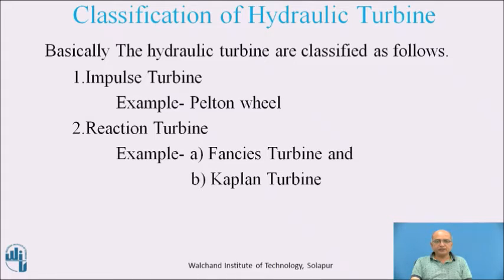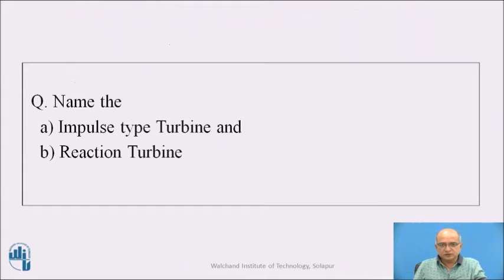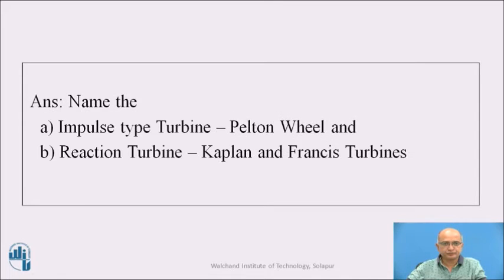For high head power plants, we can go for the impulse turbine — meaning we can have the installation of the Pelton wheel. Whereas for medium and low head, we have to go for the reaction turbine. The name of the impulse turbine is Pelton wheel, and under reaction turbines there are two types: Kaplan turbine and Francis turbine.